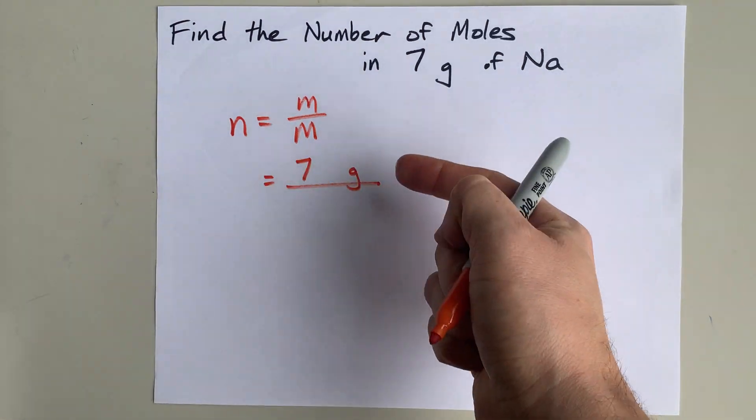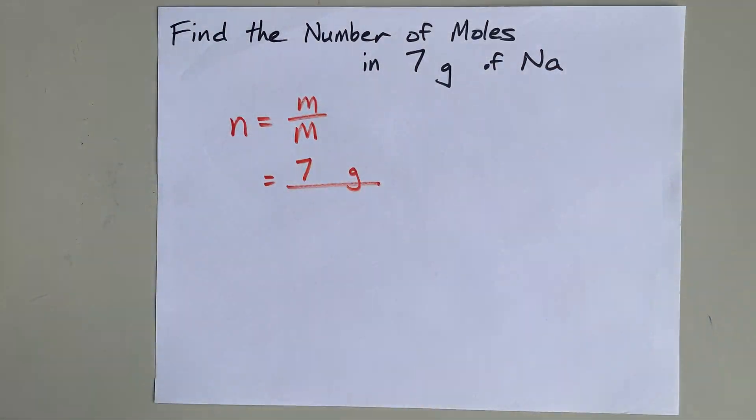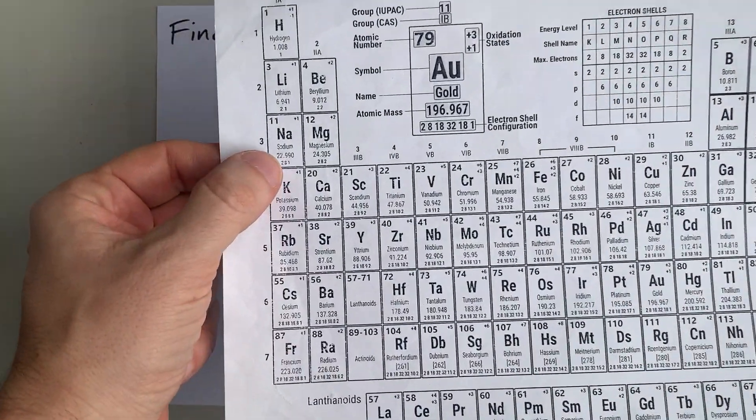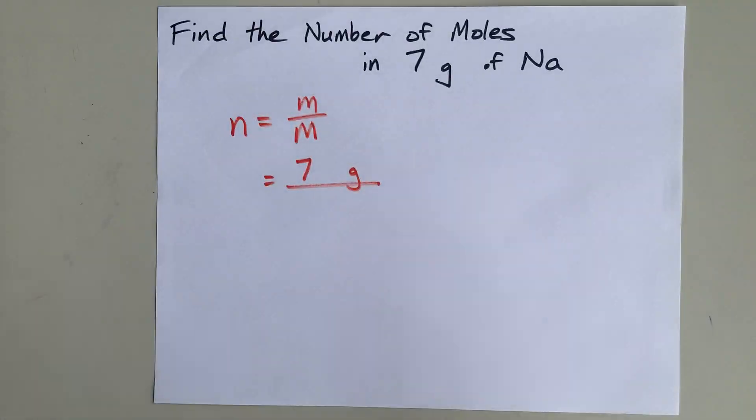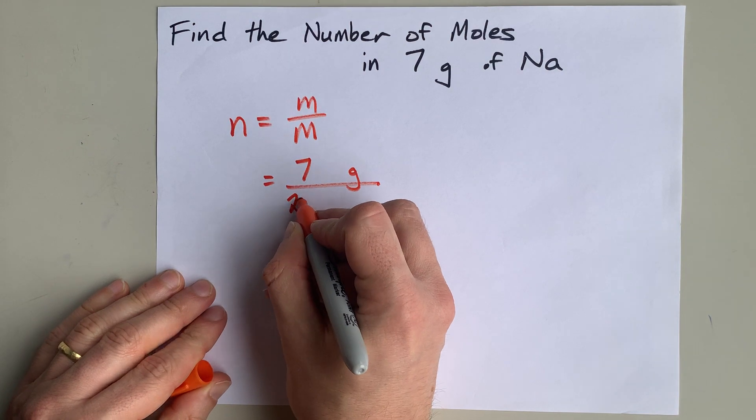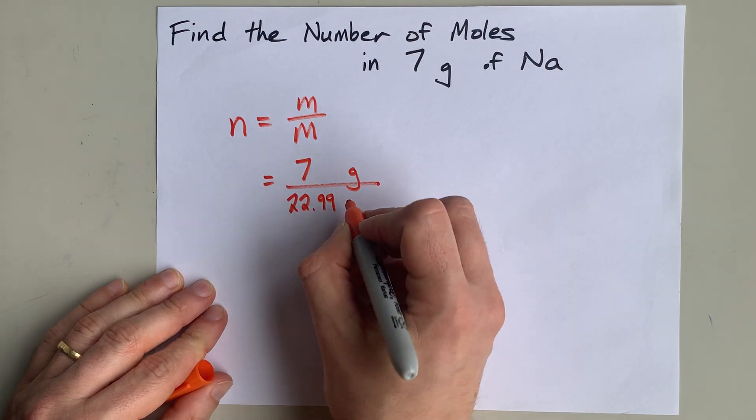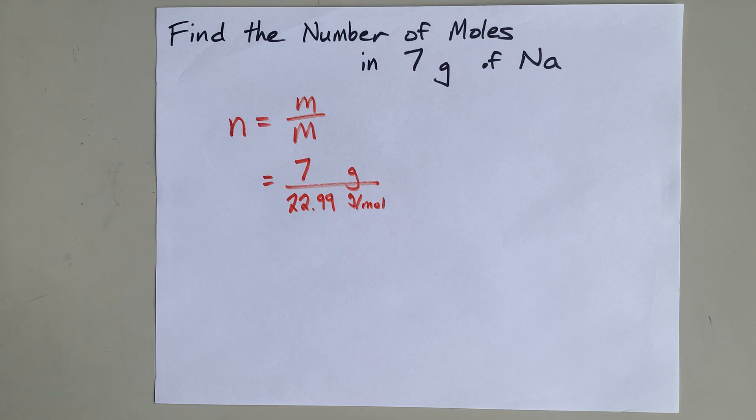Now, that's only one significant figure, which is not good. But what can you do? The molar mass or atomic mass of sodium is 22.99, according to my periodic table. So I'm going to write that here with units of grams per mole.